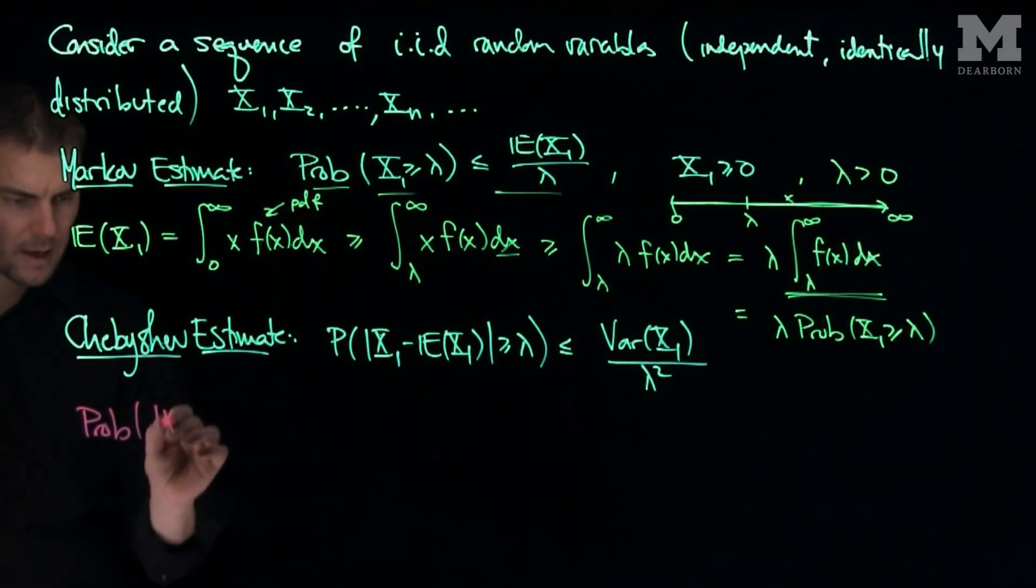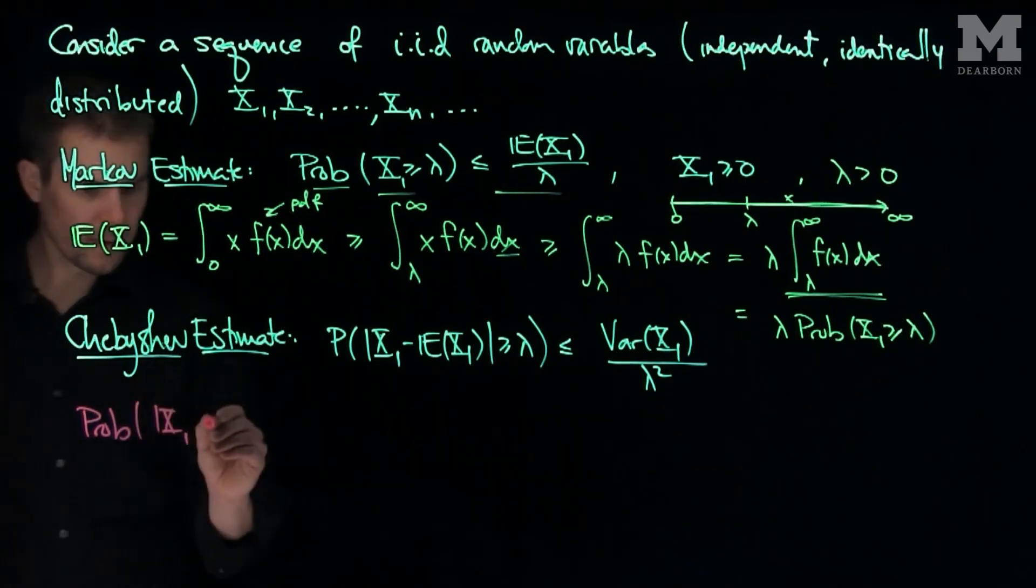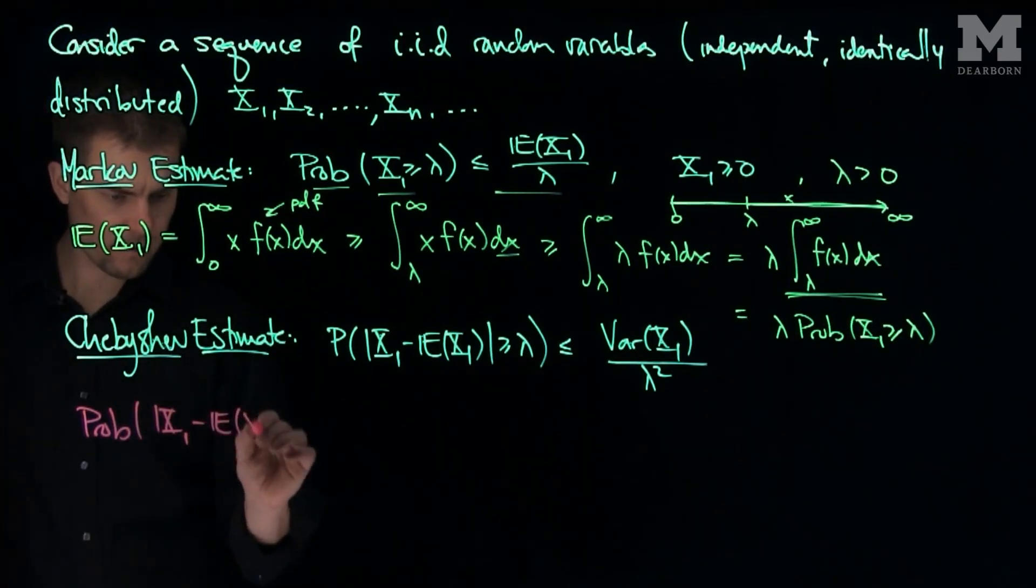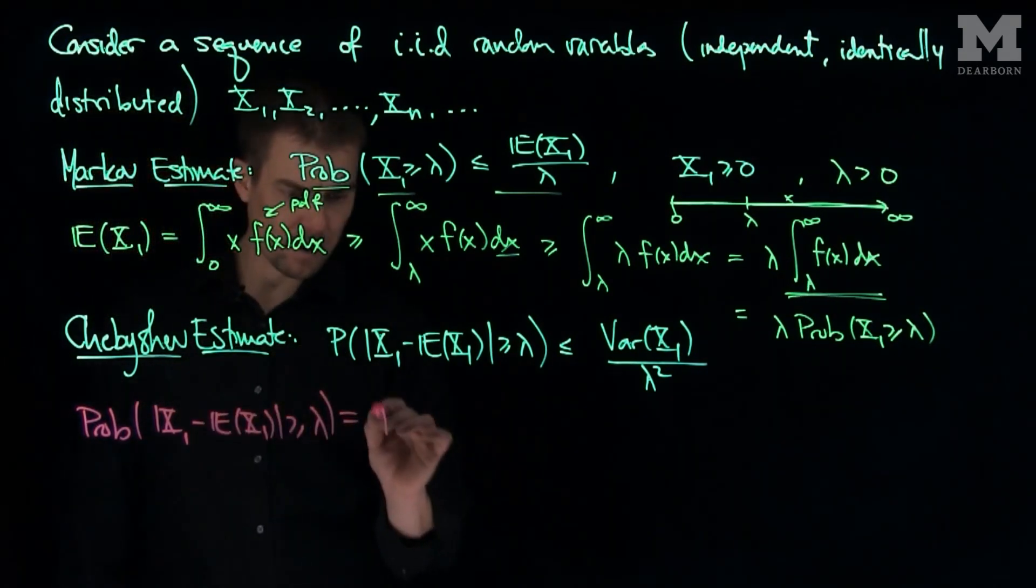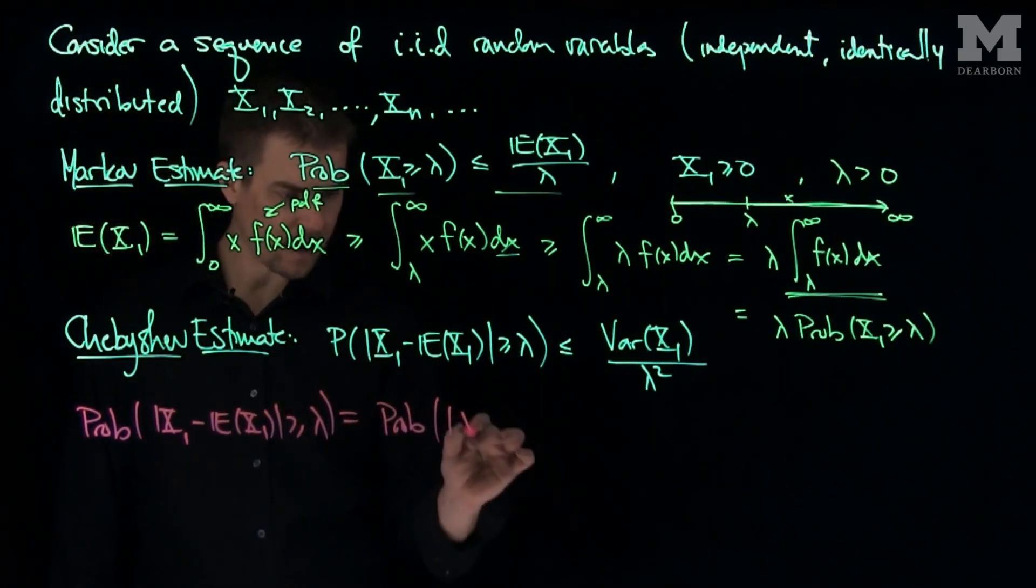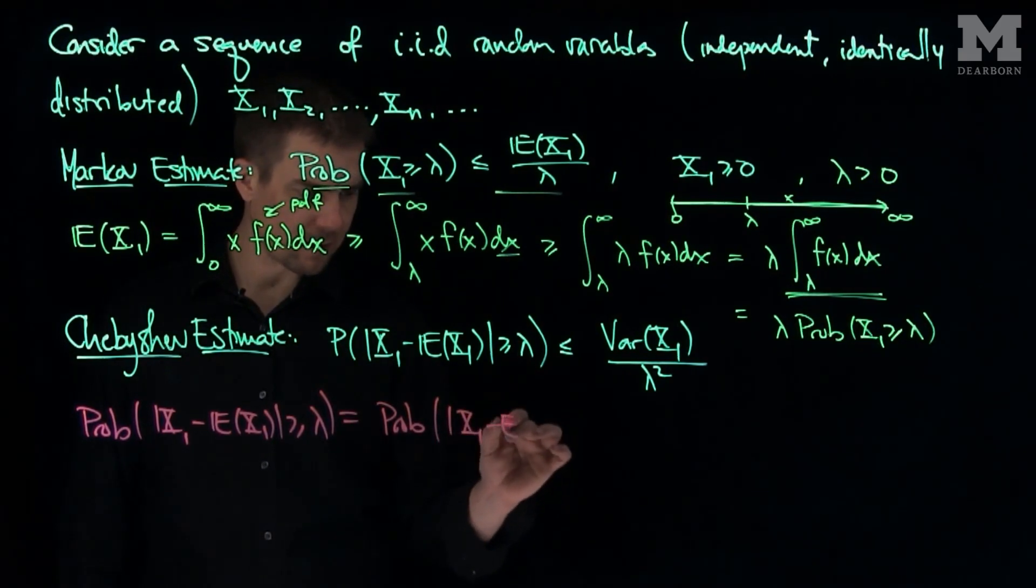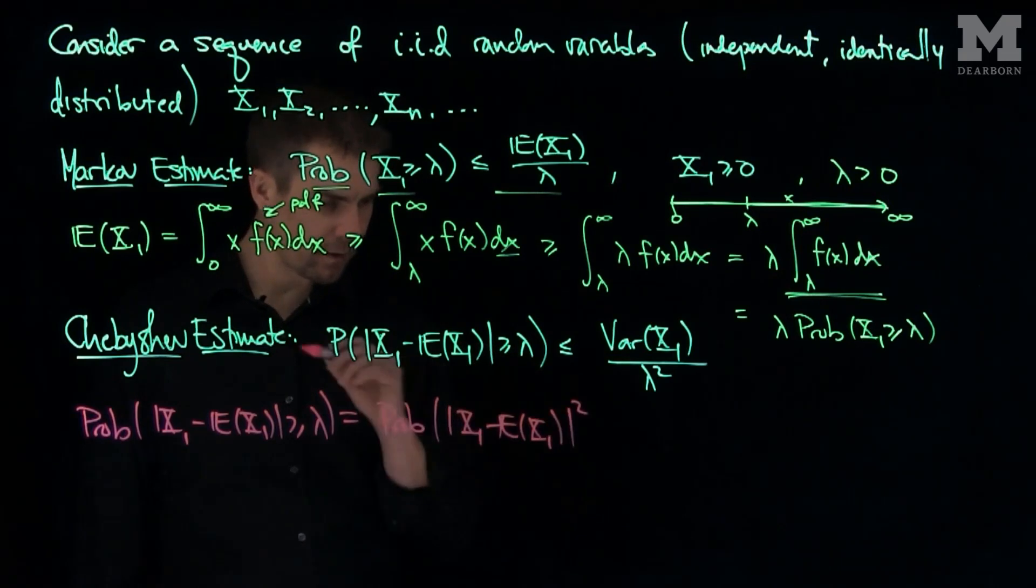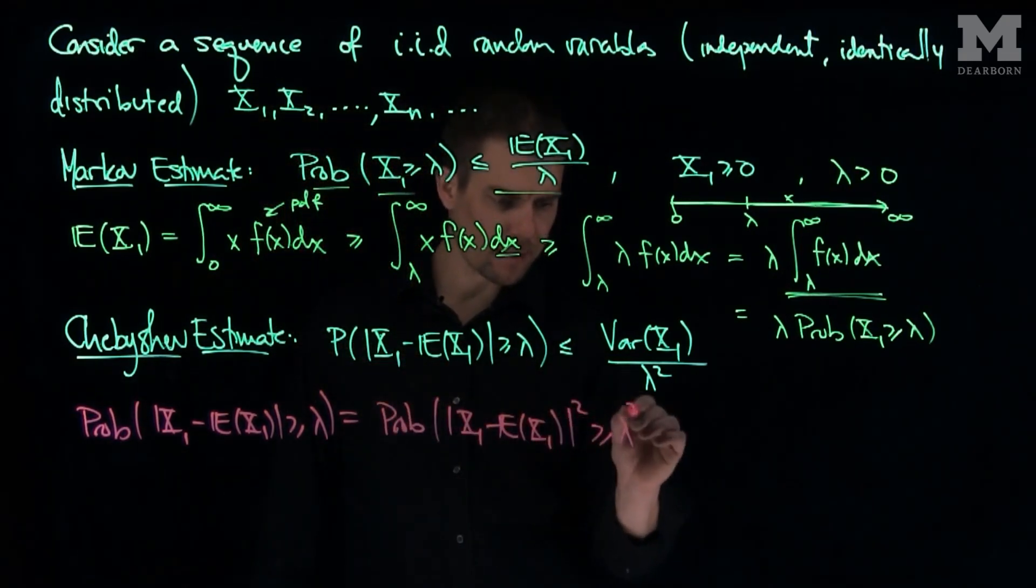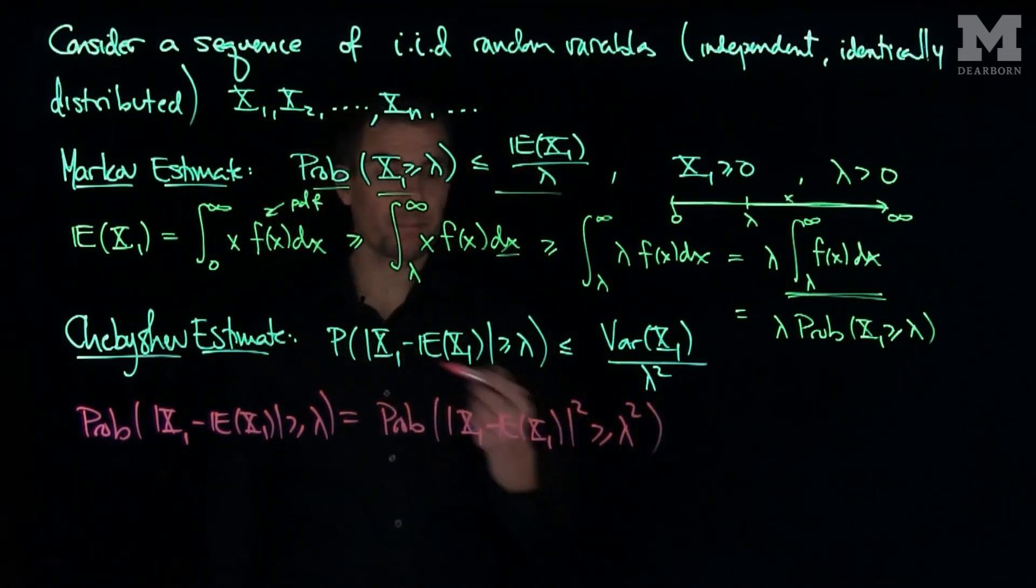The proof: the probability that X1 minus the expected value of X1 is bigger than or equal to lambda is the same thing as the probability that X1 minus the expected value of X1 squared is bigger than or equal to lambda squared. And now we can apply Markov's inequality.